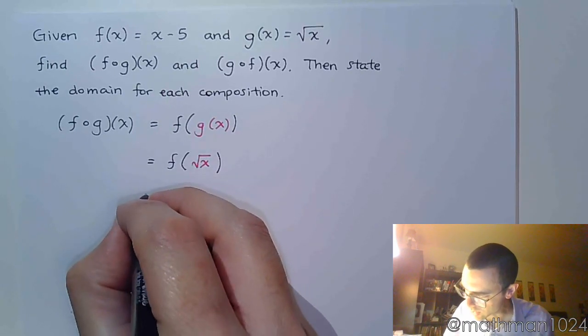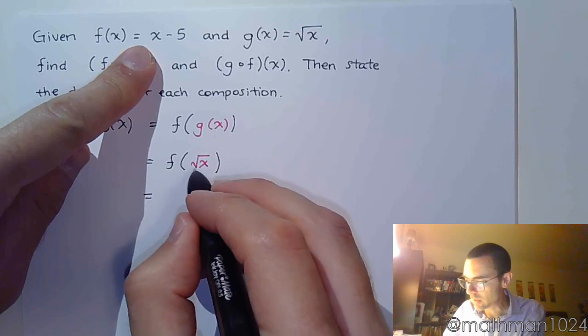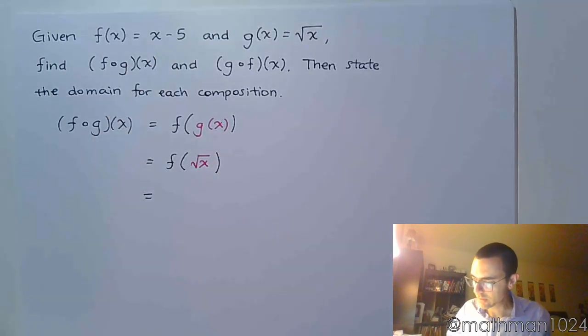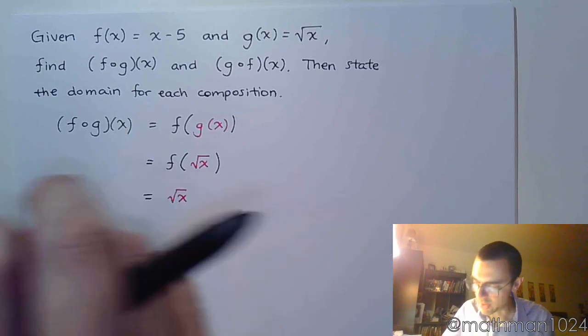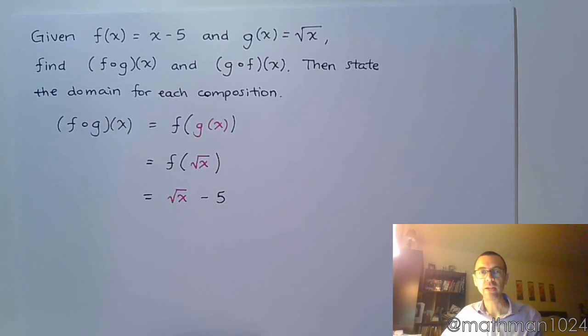And so when I work this out, I'm replacing this x with that input value, and so this becomes, let's write it like this, it becomes the square root of x minus 5.